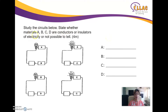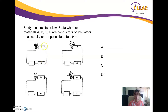Study the circuits below: state whether materials A, B, C, and D are conductors or insulators, or not possible to tell. Looking at A and B — you can see the difference between the light bulbs. Some light up (shown by lines coming out from the bulb) and some do not. In this configuration, material A and material B — the bulb did not light up, which means one of them is an insulator, leaving the circuit open.